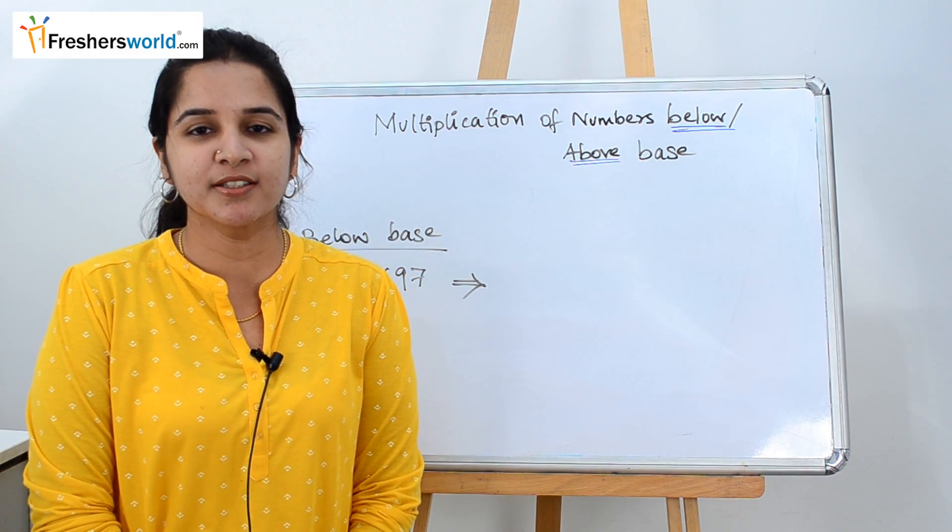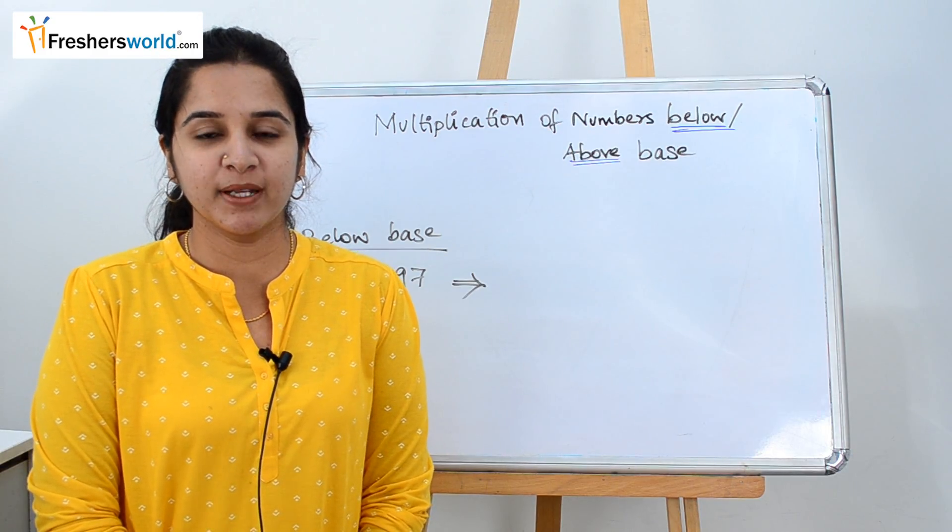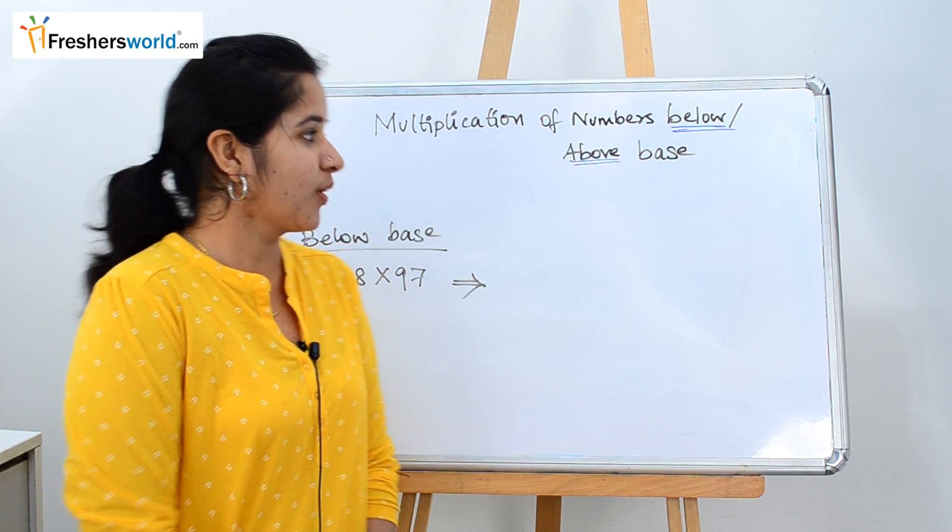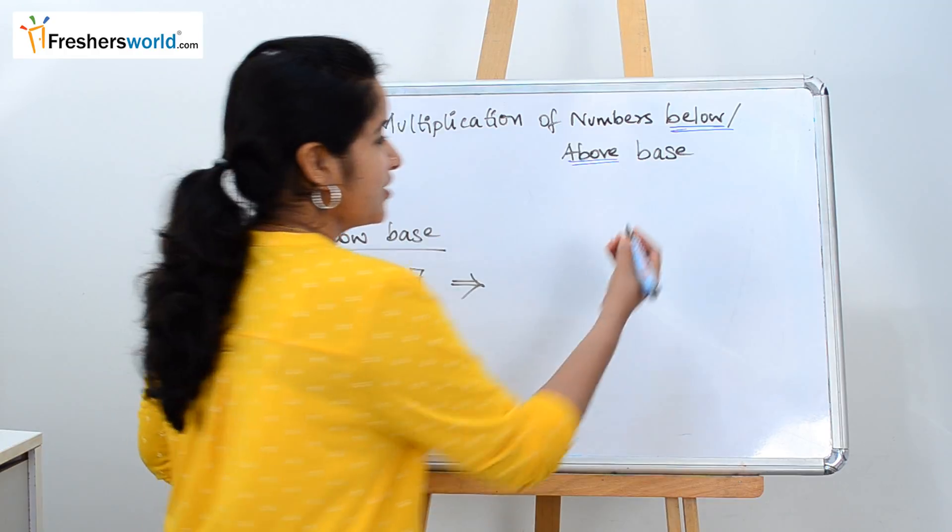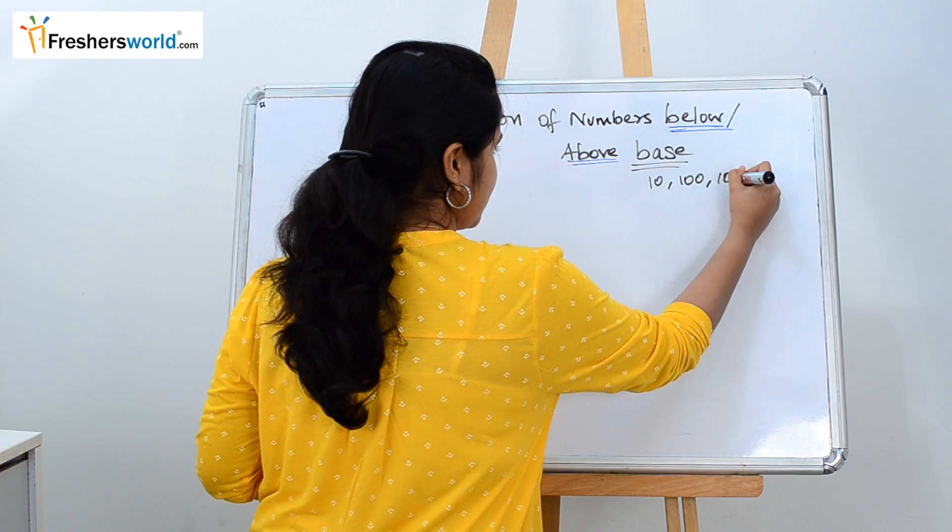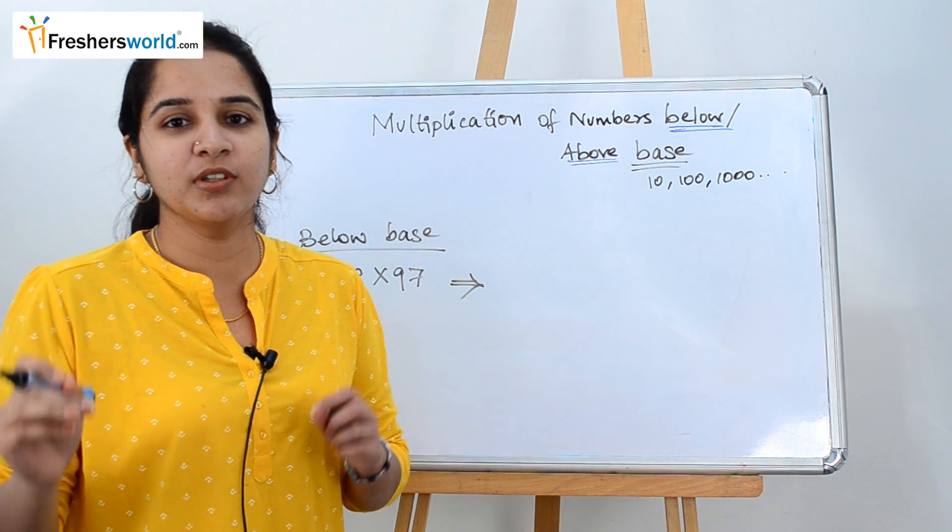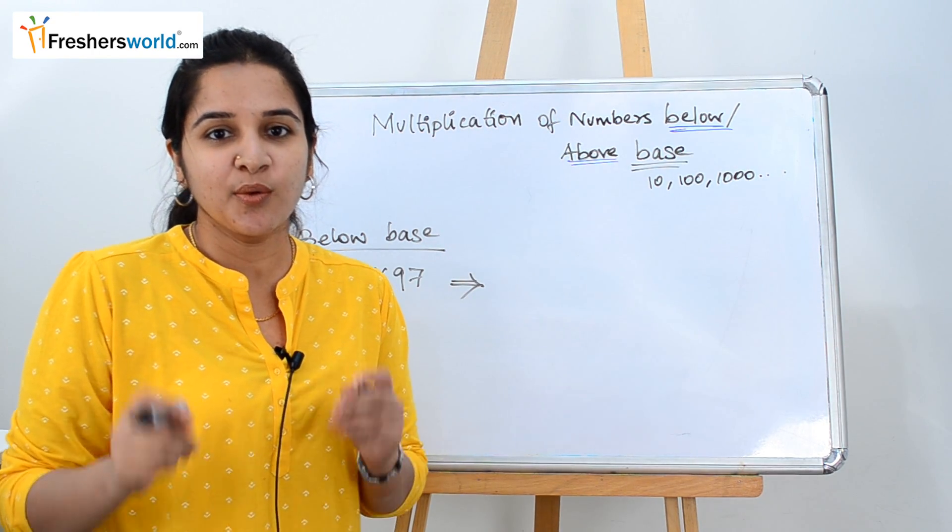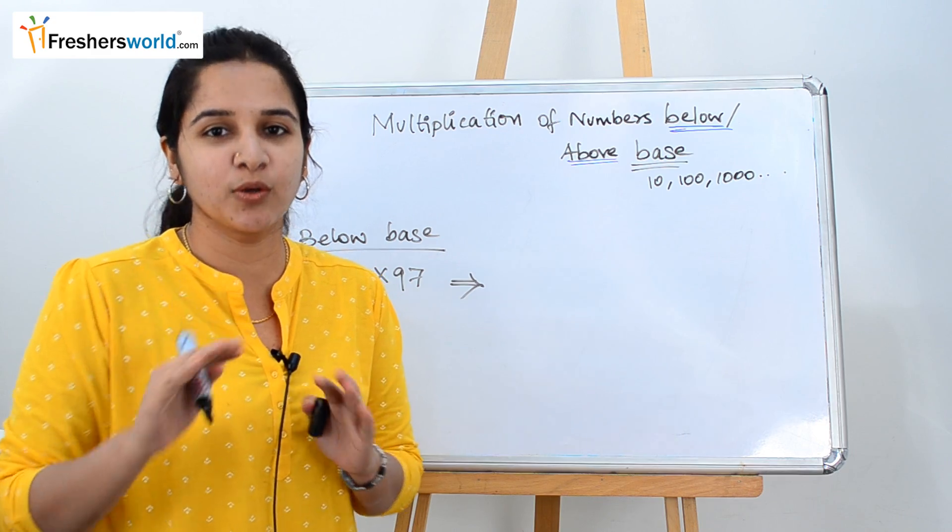The topic that we are going to look at today is multiplication of two numbers below and above the base. So what is the base here? Base that we generally consider is 10, 100, 1000 and so on. We are going to talk about the multiplication of two numbers which is going to be above or below the base.